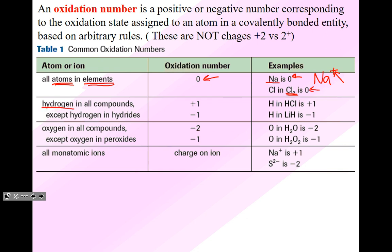Hydrogen in all compounds except hydrides has an oxidation number of plus one. If it's a hydride — found as the second part of an ionic compound — it has a charge of negative one. This is a rule that always applies. Oxygen is another one we can predict almost all the time: oxygen in all compounds has an oxidation number of negative two, except in peroxides where it has an oxidation number of negative one. Just understand that oxygen is always negative two; in peroxides it's an exception.